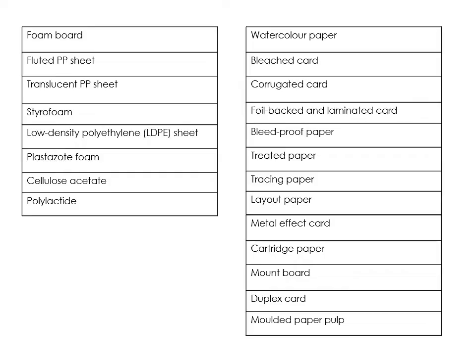On the polymer film and sheet side you've got: foam board, fluted polypropylene sheet, translucent polypropylene sheet, styrofoam, low-density polyethylene, plastazote, cellulose acetate, and polylactide. On the boards and paper side you've got: watercolor, bleached card, corrugated card, bleed proof, foil back, treated, tracing, layout, metal effect, cartridge, mount board, duplex card, and molded paper pulp.